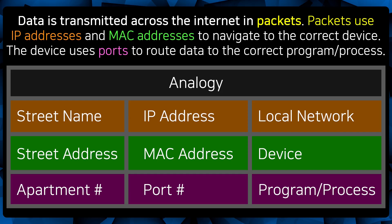That concludes the intro, now onward to the video! First, I'm going to give a general idea of how data is transmitted across the internet. On the internet, data is transmitted in packets. Packets use IP addresses and MAC addresses to navigate to the correct device. The device then uses ports to route the data to the correct program or process. So we can think of an IP address as a street name, which points to the local network, and the MAC address is like the street address, which refers to the device itself. Finally, the port number is kind of like an apartment number, which is what the device uses to route data to the correct process.